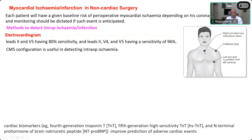With CM5 configuration — right arm lead at the manubrium sterni, left arm lead at the V5 position, and indifferent lead on the left shoulder — this gives a more accurate picture including detection of sub-endocardial ischemia. It need not always be a major coronary block like a right or left coronary occlusion; even sub-endocardial ischemia can be detected by the CM5 configuration. So the primary answer expected for intraoperative infarction in non-cardiac surgery is how to place the ECG leads.